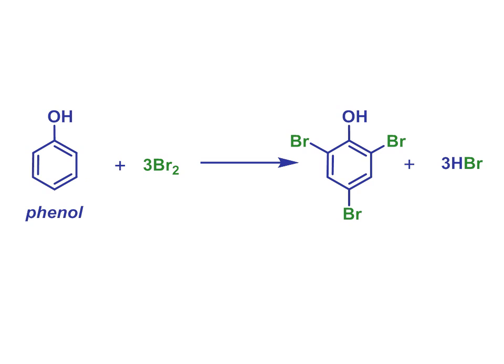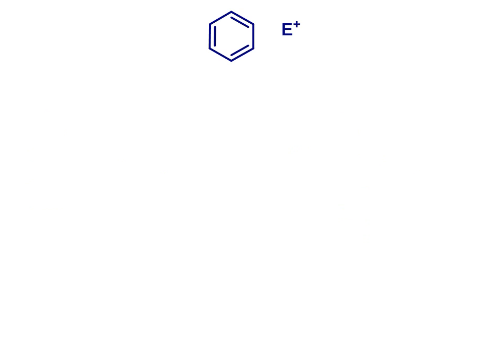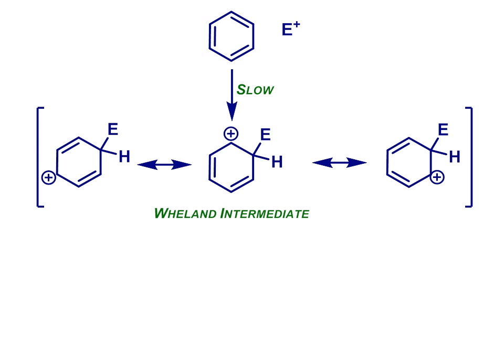Before we do that, let's remind ourselves of the general mechanism for an electrophilic aromatic substitution reaction. Remember that it starts with a slow addition step to give a resonance-stabilized carbocation intermediate called the Wieland intermediate. The positive charge is stabilized by delocalization around the ring. Then rapid loss of a proton regenerates the aromatic system and gives us what is overall a substituted product.